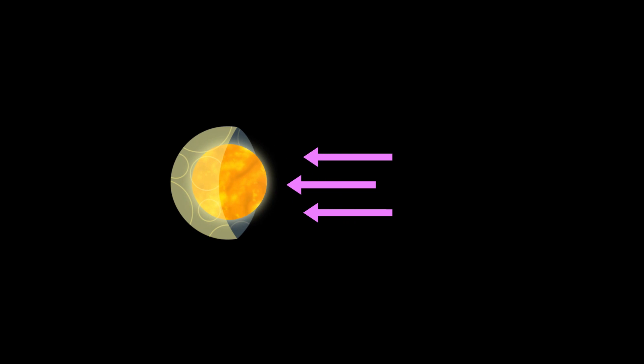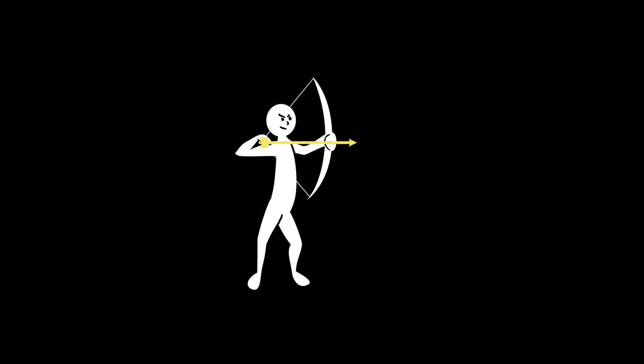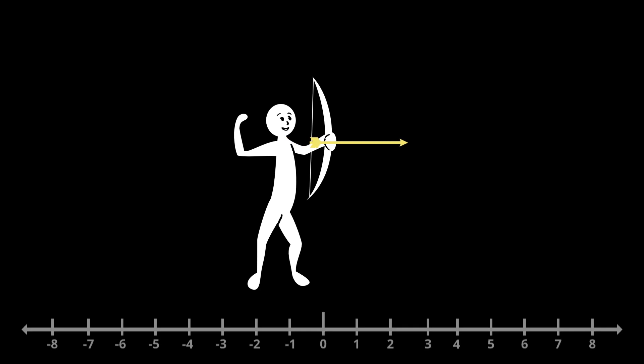This is best understood by analogy. Imagine an archer with a bow and arrow floating in the middle of space. If we identify the archer, bow, and arrow as the system, and if this system is initially stationary and not moving, then the total initial momentum of the system is p_i equals zero. If the archer fires the arrow and the arrow moves in, say, the positive x direction, then it will have some momentum of, say, mv.